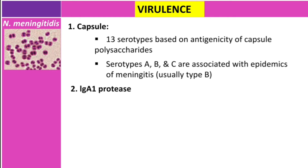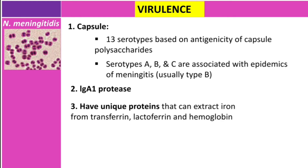The second virulence factor is IgA1 protease. This cleaves IgA — remember it's pentameric — at the hinge region, destroying the hinge so that the mucosal immunity of the individual is disabled.